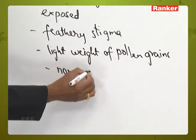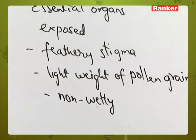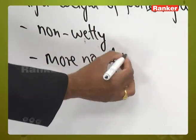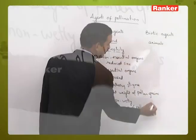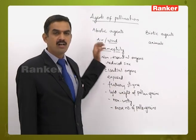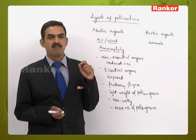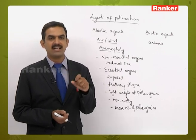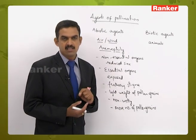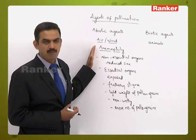Pollen grains should also be non-weighty so they can be easily carried by wind. A more number of pollen grains are produced by anemophilous flowers because pollen grains released from the anther move in a non-directional manner. Most pollen grains are wasted, and pollination occurs by chance rather than by choice, which is why more pollen grains must be produced.